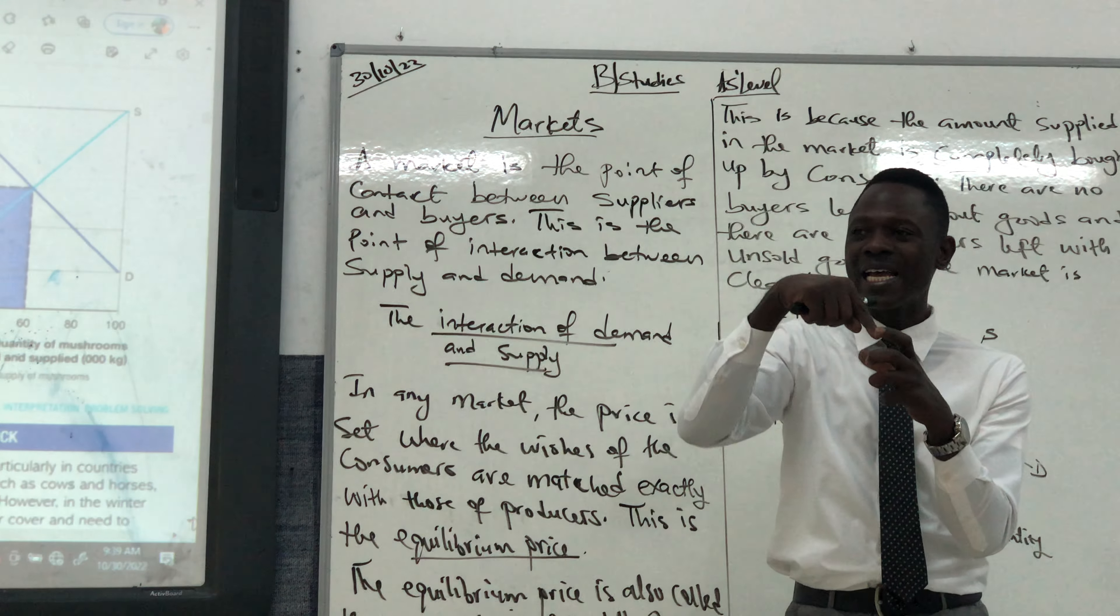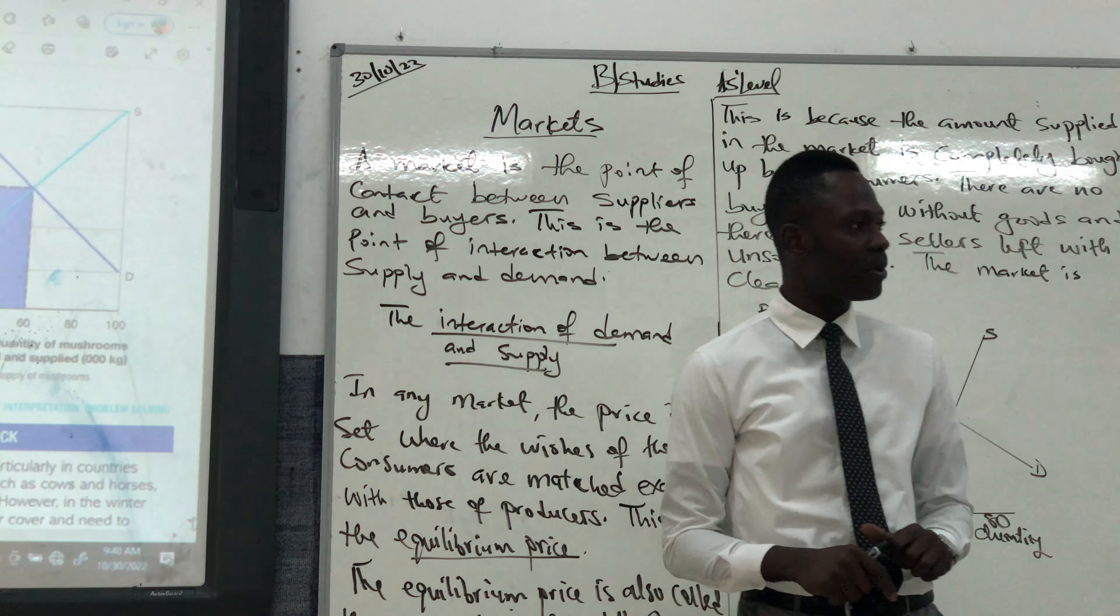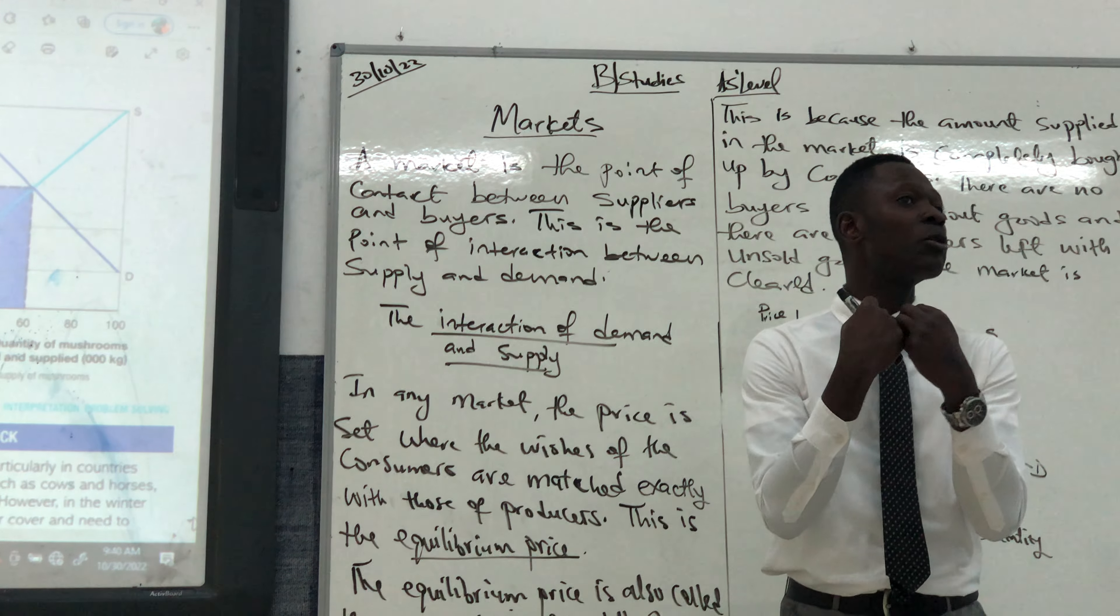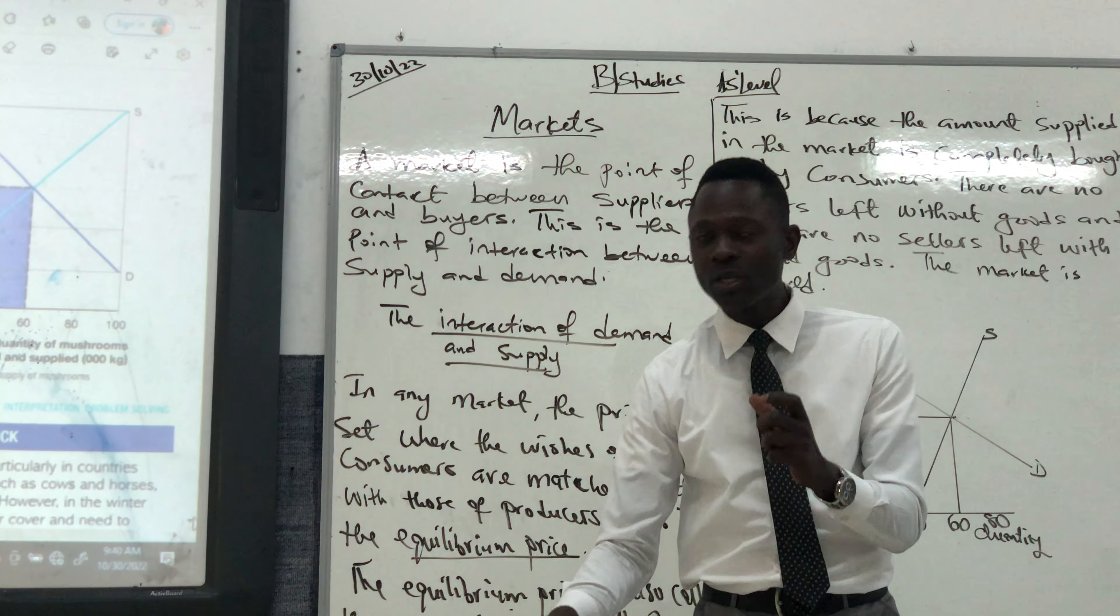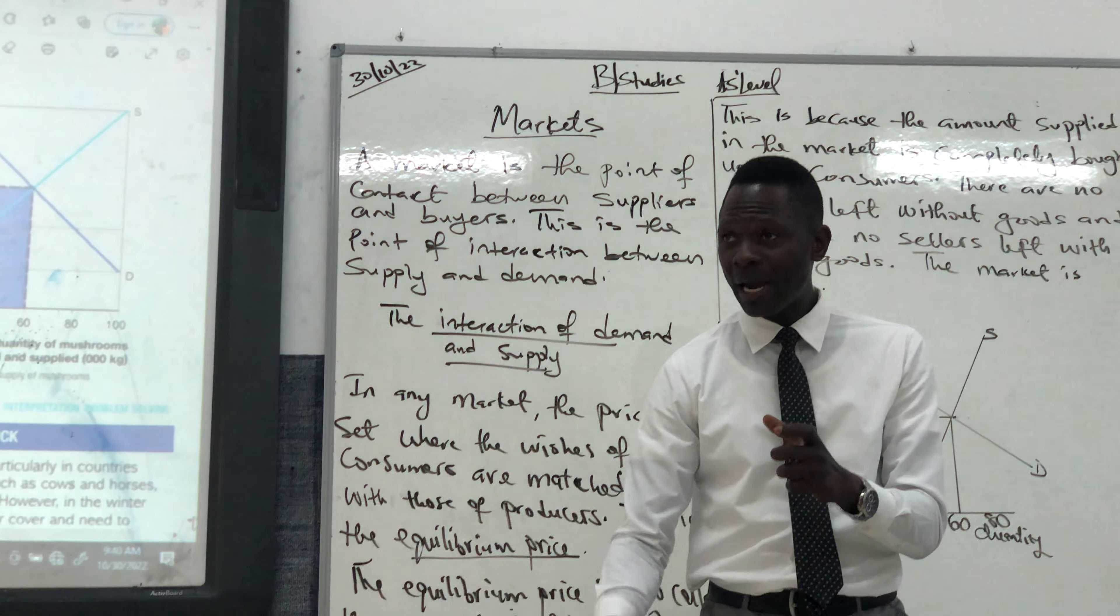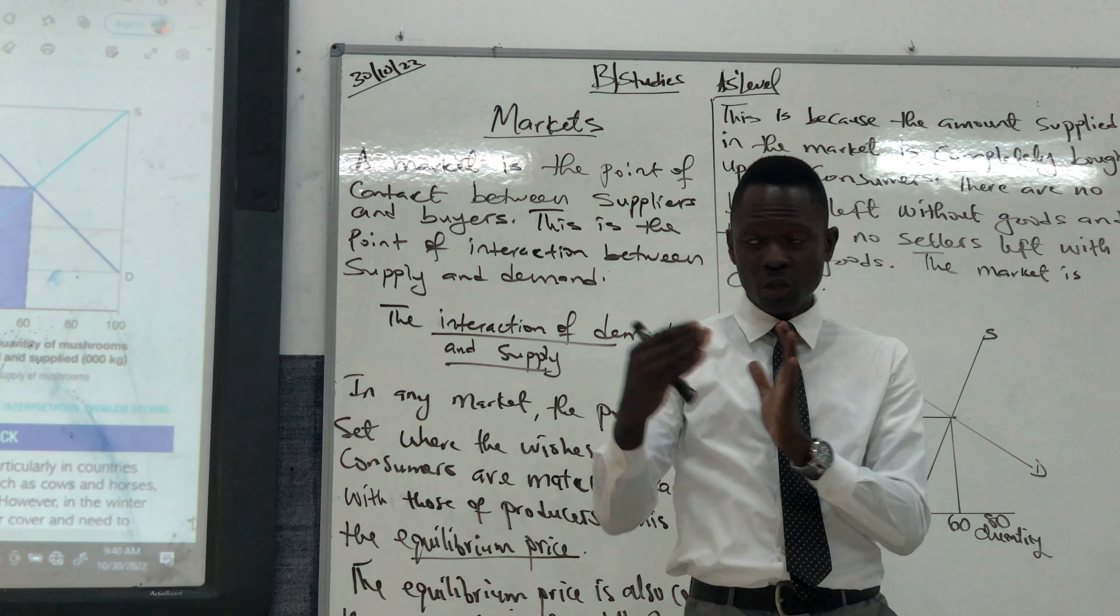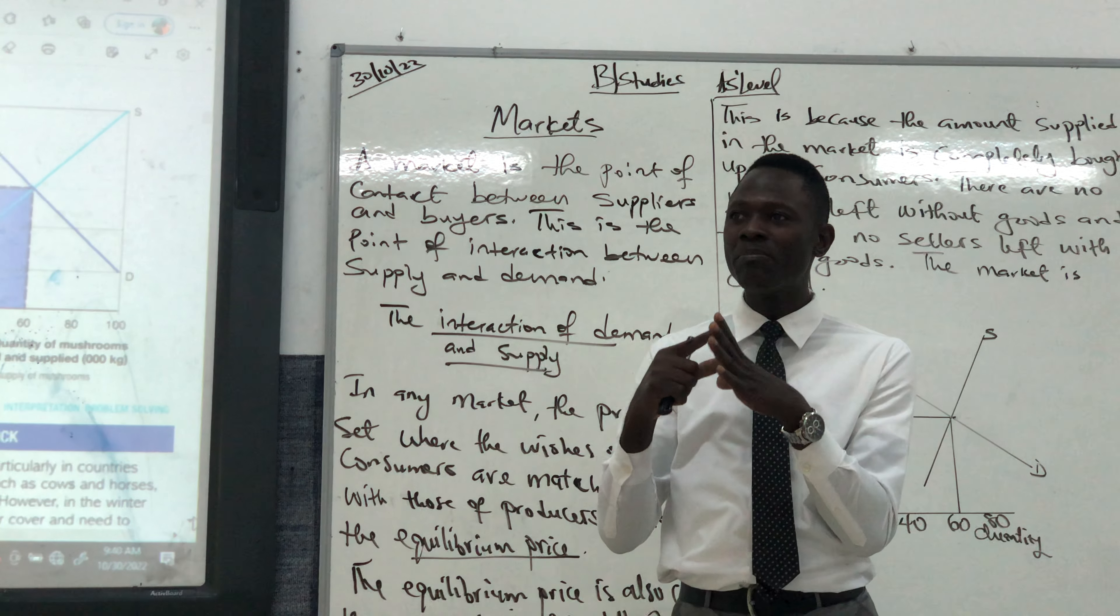The price must be set according to the wishes of the consumers. If not, consumers are not going to buy. Remember that in the law of demand, we said the higher the price, the lower the quantity demanded. The lower the price, the higher the quantity demanded. What does this imply?